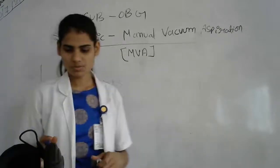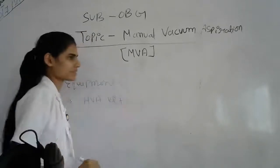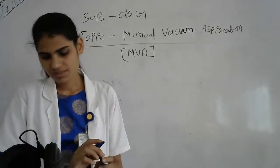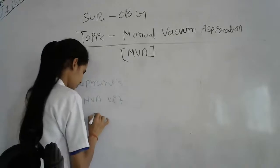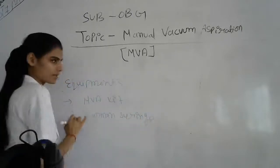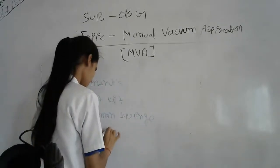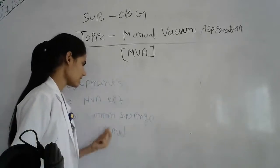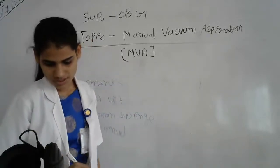The equipment required for this procedure: First is the manual vacuum aspiration kit. Second is the thermal syringe, also known as a manual vacuum aspirator. Also required are the cannula and various instruments including a Valsalva mott or similar speculum instruments.